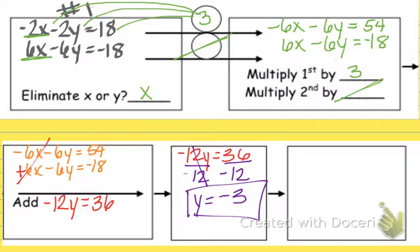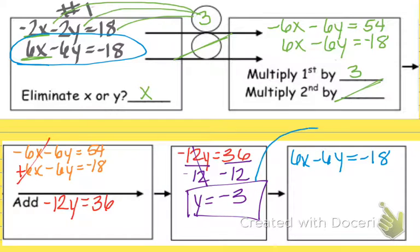So now, I'm going back to one of my original equations up here. I can do the top one, I can do the bottom one, it really doesn't matter. I'm going to do the bottom one. So, write them down, 6x minus 6y equals negative 18. And we're going to substitute that negative 3 that we found for y in right here. So make sure you're substituting that negative 3 in. So once we do that, you're going to get something like 6x minus 6 times negative 3 equals negative 18.